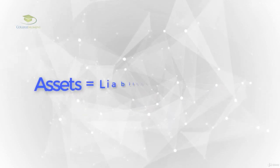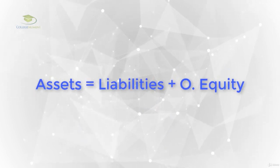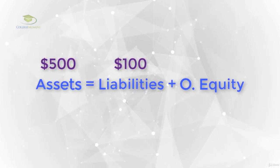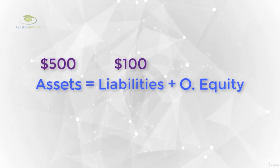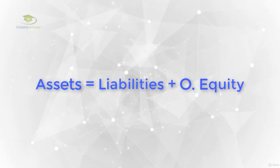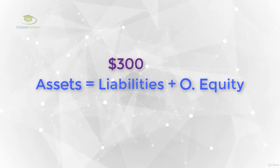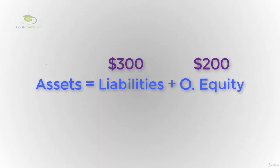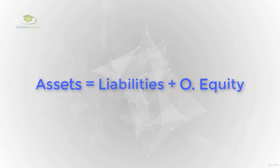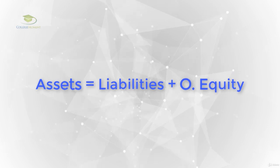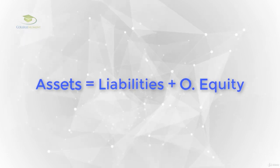Let's see how the accounting equation works. If assets were 500 and liabilities were 100, what is the amount of owner's equity? Of course, 400. If liabilities were 300 and owner's equity was 200, what is the amount of assets? Of course, 500. Keep in mind that the equation always must balance — assets must equal liabilities plus owner's equity.